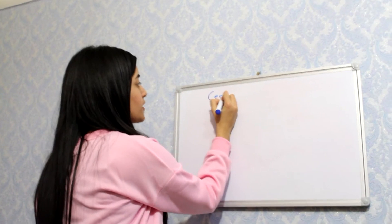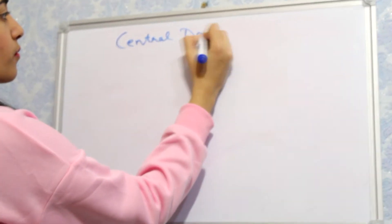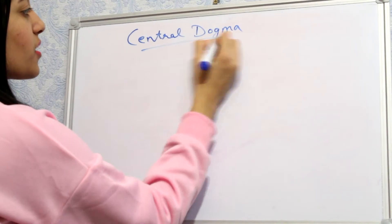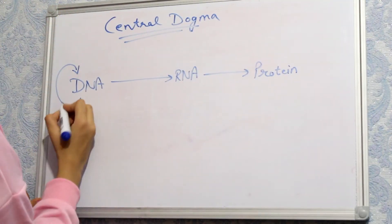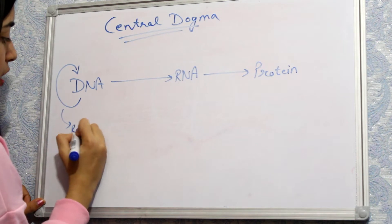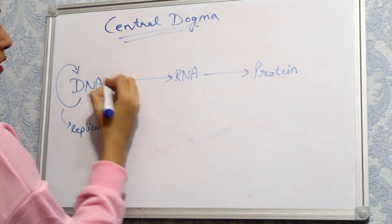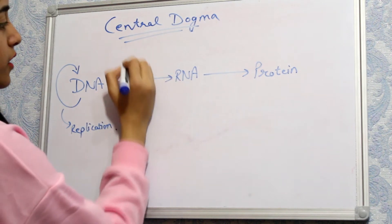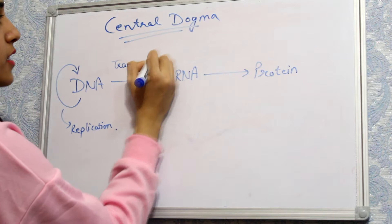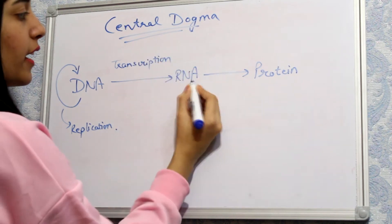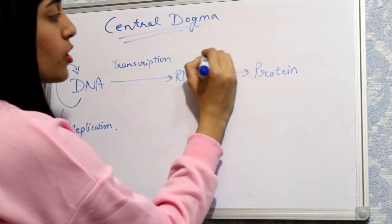First we'll discuss what is central dogma. This is just a simple diagram. The central dogma consists of three main steps: replication, which is duplication of DNA; transcription, which is the conversion of DNA to RNA; and the third stage is the conversion of RNA to protein.